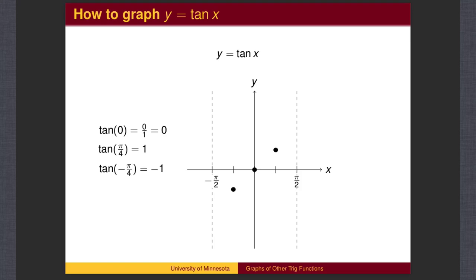At negative pi over 4, we get the same result, except that the sine value is negative, while the cosine value remains positive, and therefore the tangent of negative pi over 4 is negative 1.